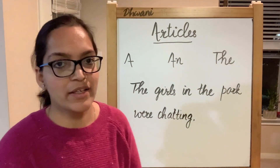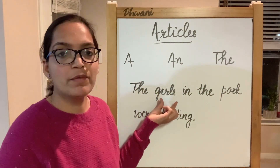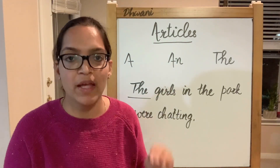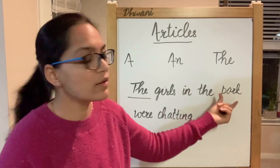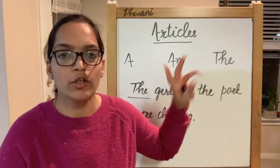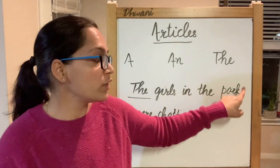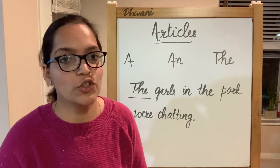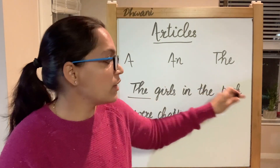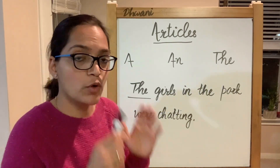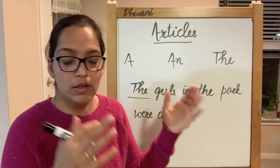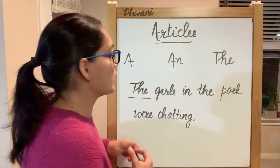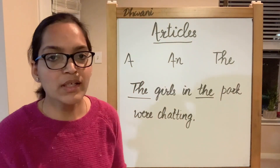For example: 'The girls in the park were chatting.' The is used here before the plural noun 'girls.' We cannot use a or an here because it is a plural noun — it's going to be 'the girls in the park.' Also, 'the park' shows that we are talking about a particular, specific park — not just any park. The is used here to show that definite noun.